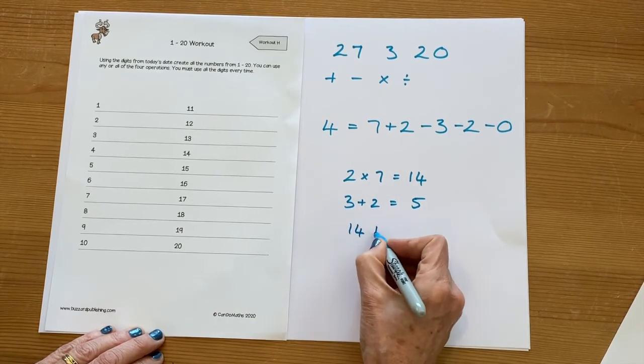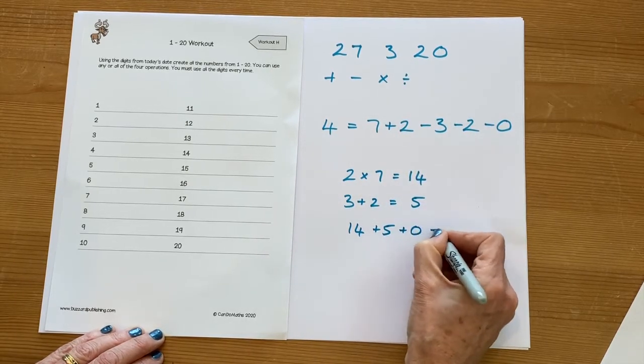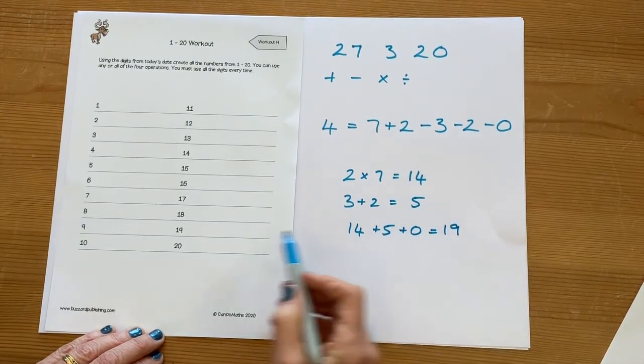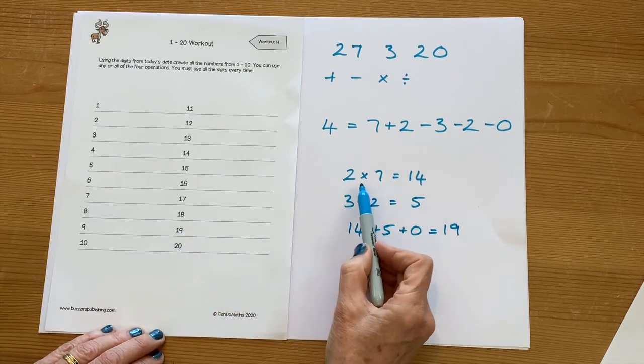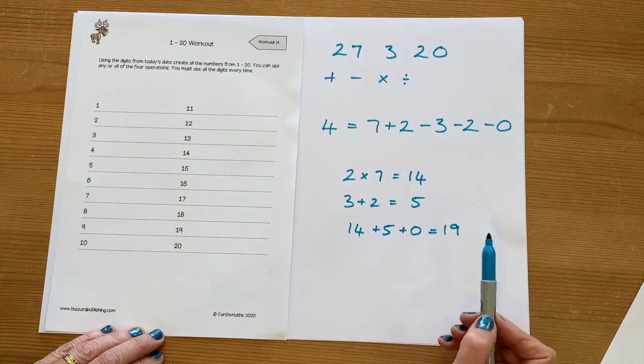So now I could use these two numbers to make another number. So for example, I've got fourteen add five - now don't forget your zero - so add zero equals 19. So we've made 19 by multiplying two of the digits, adding two of the digits, and then combining those.